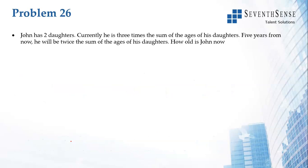John has two daughters. Currently he is three times the sum of the ages of his daughters. Five years from now he will be twice the sum of the ages of his daughters. We have to find the age of John now.